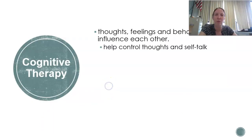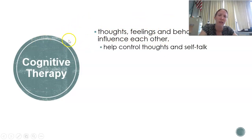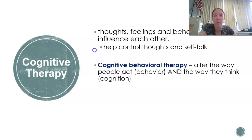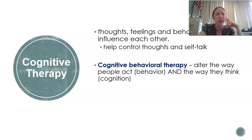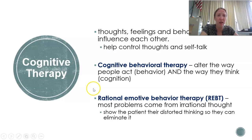Then we have cognitive therapy, which is about thinking. When we think cognition, we should think about thinking. This is the belief that thoughts, feelings, and behaviors all influence each other — kind of that reciprocal determinism feeling. What cognitive therapy is really trying to do is help someone control their thoughts and their self-talk in a really positive way. There are two types within this category. First, cognitive behavioral therapy, where therapists focus on altering the way people act and the way they think — challenging those ways of thinking: don't think in such a catastrophic way, don't think in terms of worst-case scenario. Let's think about what you can do and then change your behavior accordingly.